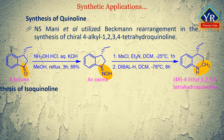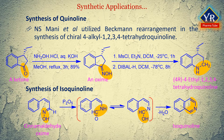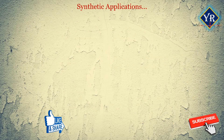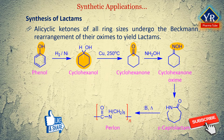In the synthesis of isoquinoline, isoquinoline is synthesized from cinnamaldehyde. Cinnamaldehyde on treatment with phosphorus pentoxide forms an intermediate which upon dehydration forms isoquinoline. In the synthesis of lactams, alicyclic ketones of all ring sizes undergo the Beckman rearrangement of their oximes to yield lactams.